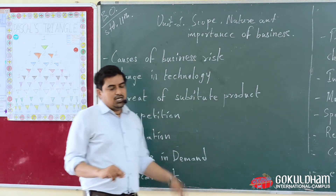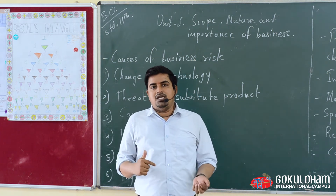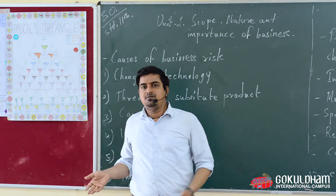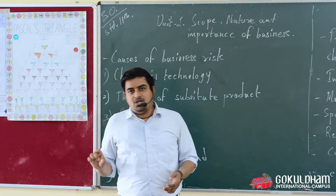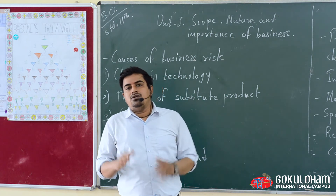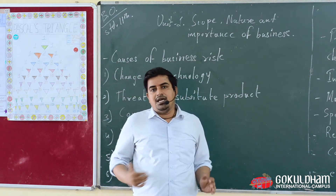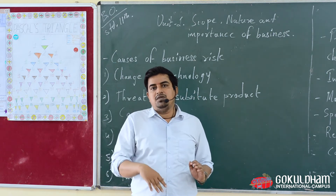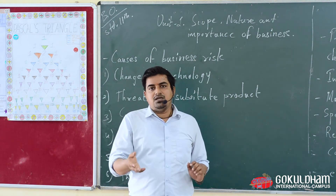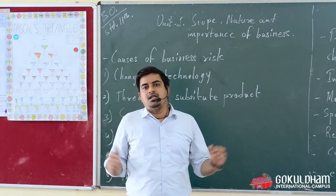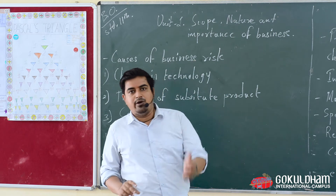The third risk is competition. Competition directly affects the profit of the business. A businessman may decide to increase expenditure on advertisement and reduce the price of the product in order to face the competition. Competition को face करने के लिए कभी-कभी businessman जो है वो advertisement पर ज्यादा expenditure करता है और अपने product की price कम कर देता है। तो ये भी एक risk है जो business को affect करता है।